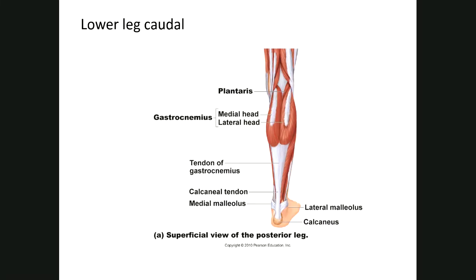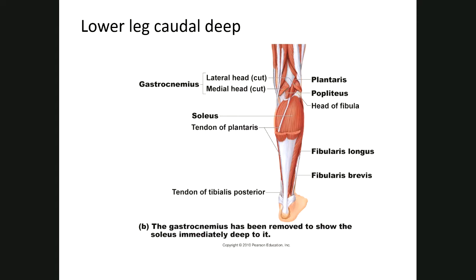From this angle you can see the gastrocnemius has a medial head and a lateral head. Both continue into the calcaneal tendon, also known as the Achilles tendon, inserting on the calcaneus. The complete back of your calf muscle is gastrocnemius. Your soleus has been dissected out underneath — if you pull the gastroc down, the soleus is underneath it.